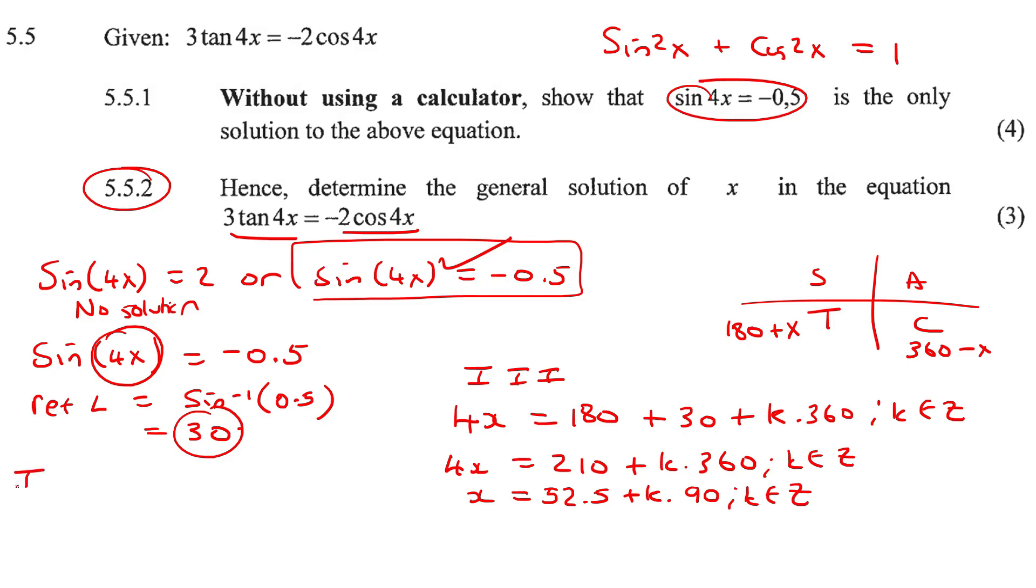And then in quadrant number four, we're going to say 4x equals to 360 minus your reference angle, plus k times 360, k element of z. And then that's going to end up being 4x equals to 330 plus k360 k element of z. Then divide everything by 4. And so x would be 330 divided by 4. It's 82.5 plus k times 90, k element z. And so there we have the answers.